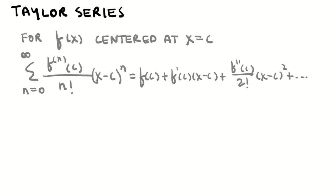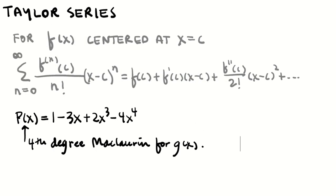One thing a Taylor polynomial can help tell us is the value of a derivative at the centering point. For example, suppose p(x) is the fourth degree Maclaurin polynomial for g(x).